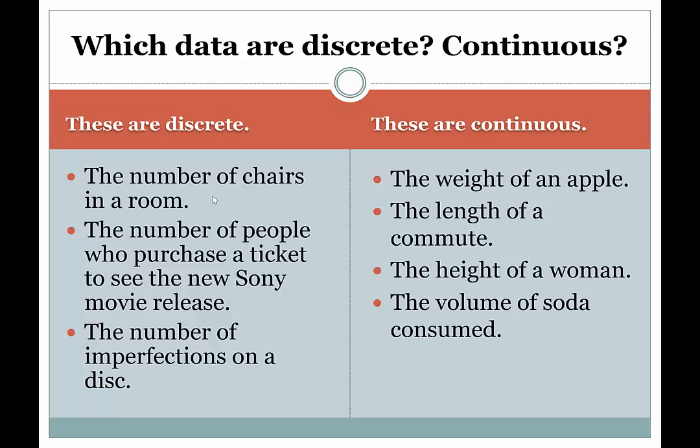The number of people who purchase a ticket to see a new Sony movie release. Again, you could have a million people see it. You have a million and one people see it, but you can't have a million point seven five people see the movie. It makes no sense. Can't have a fraction of a person see a movie. Either the person has seen it or they haven't. They can't have a fraction of them see it.